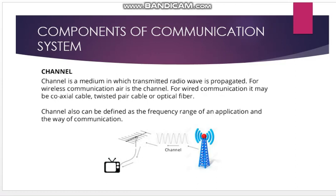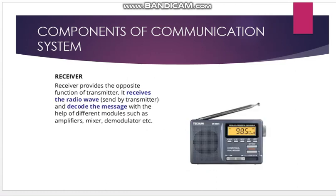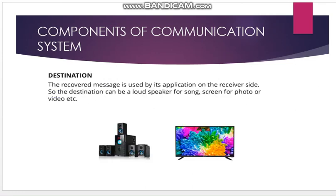The receiver provides the opposite function of the transmitter — it receives the radio wave and decodes the message with the help of different modules such as amplifier and mixer. The destination is where you listen: a music box, watching TV — the loudspeakers at the output are the destination.